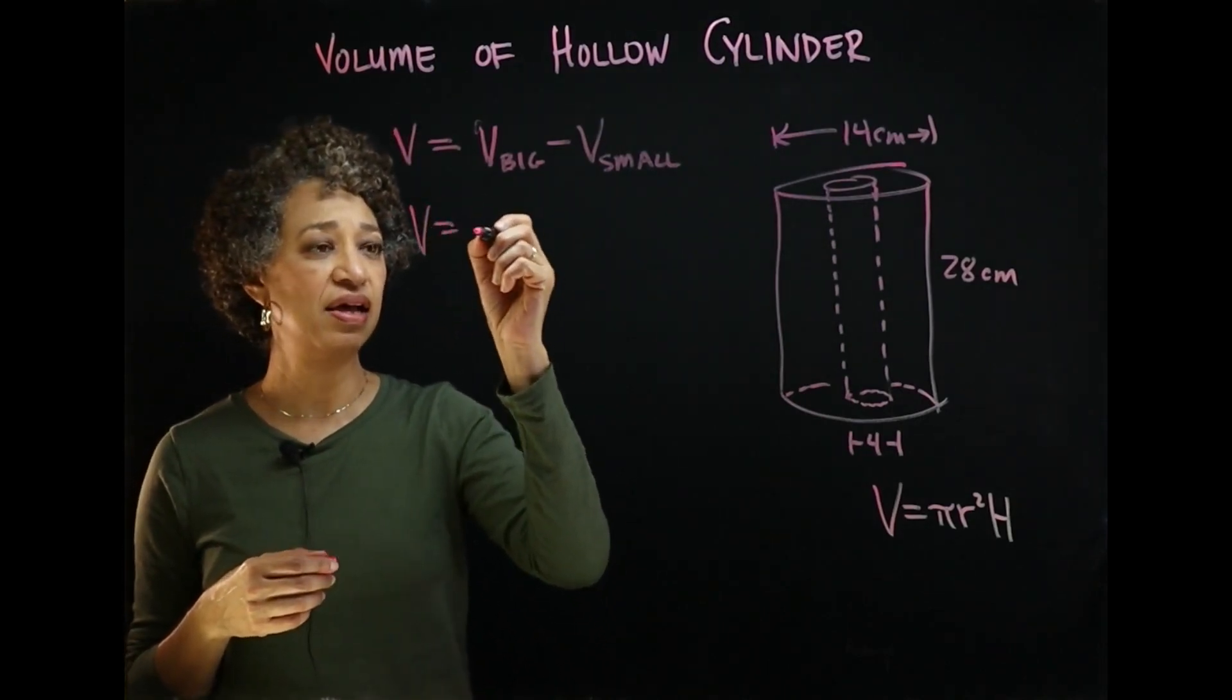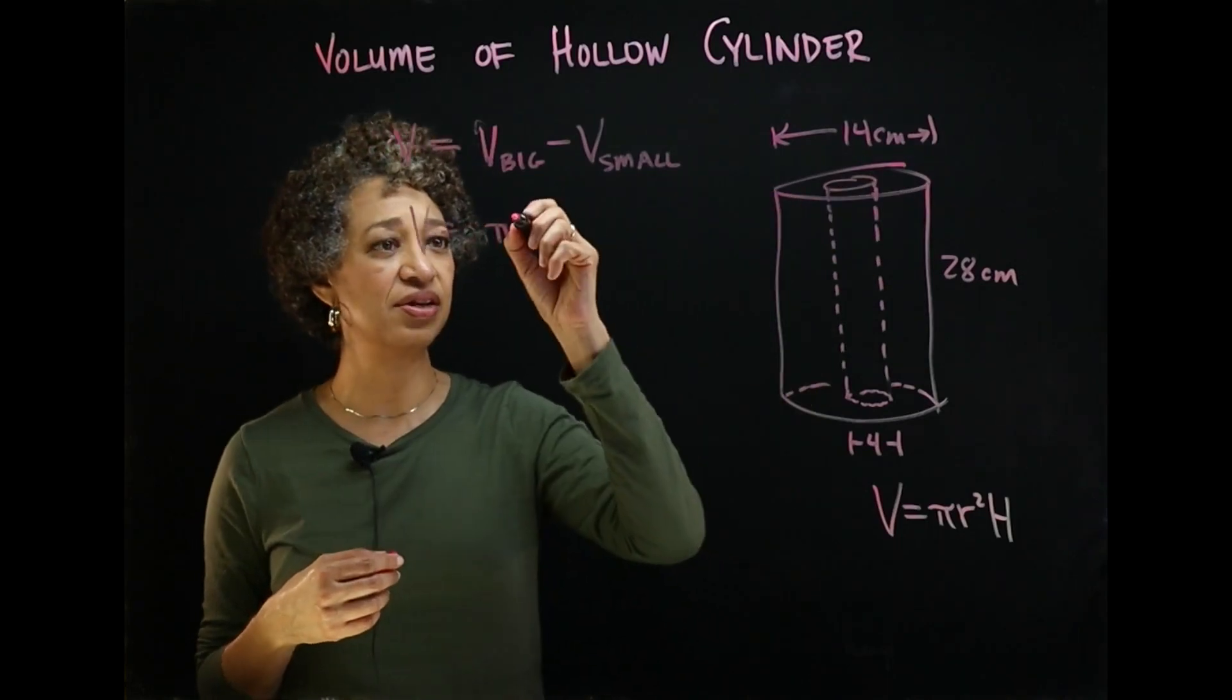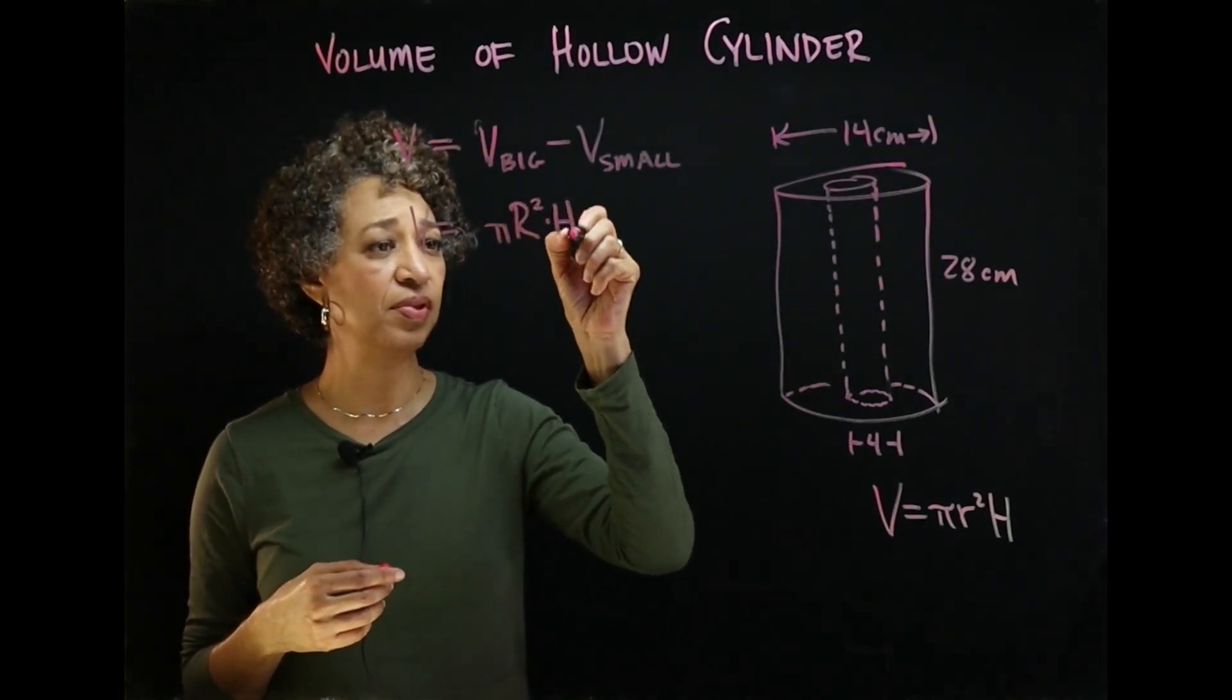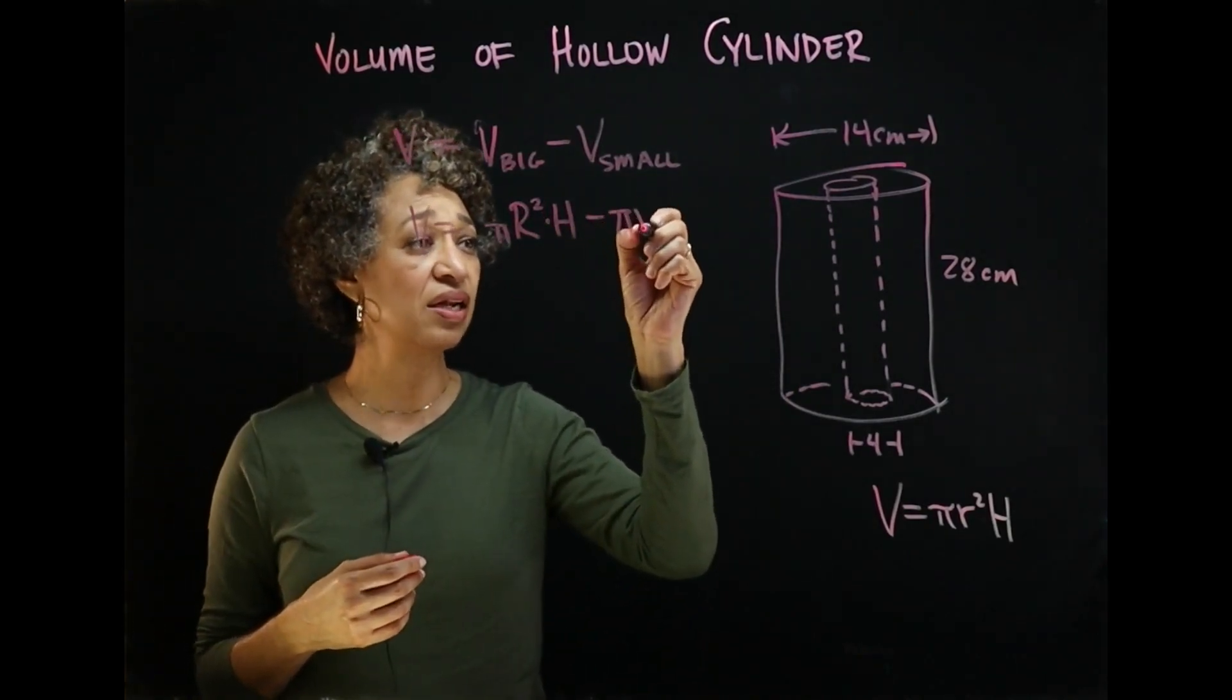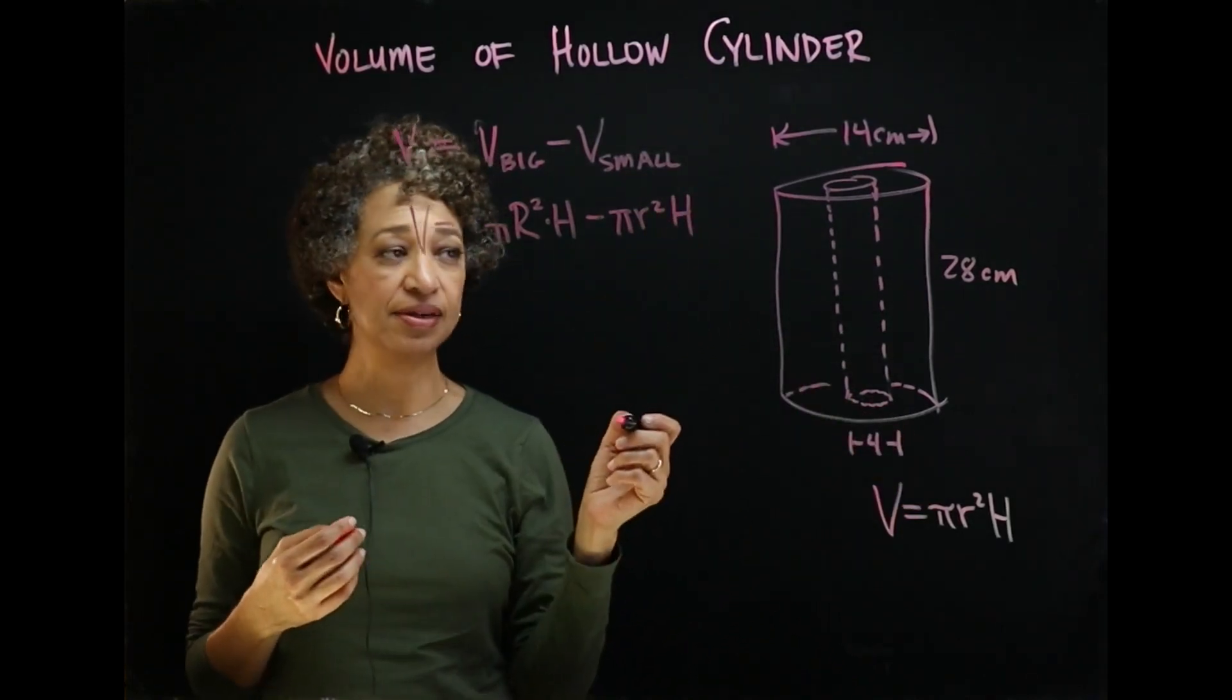So we have pi and I'm going to call the radius of the big cylinder capital R. So pi R squared times the height, pi big R squared times the height minus pi little r squared. That's going to be the radius of the inner cylinder times the height.